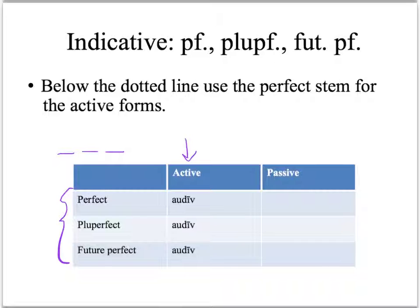Save time: write the perfect stem three times, then remember which ending you need. For the perfect: -i, -isti, -it. Pluperfect: -eram, -eras, -erat. And for the future perfect: -ero, -eris, -erit. Again, these are all one word, even though it looks like separate words.